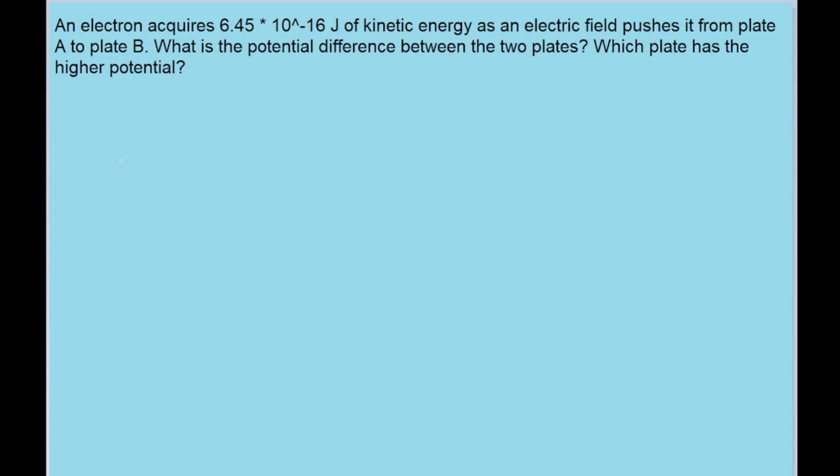Now we have a formula for this that we use for these problems. The potential difference between two plates, or two points rather, is equal to the negative of the amount of work that has been done on the particle between the two plates, divided by the particle's charge.